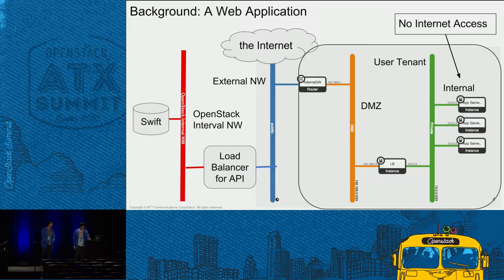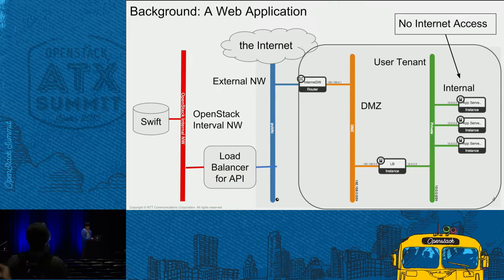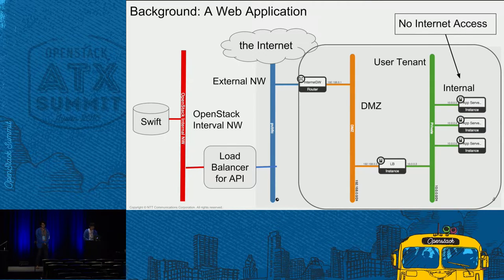Let's move on to our background. This diagram shows an example of a web application system on a public cloud using OpenStack. We have Swift behind the load balancer for API, and they are connected to the API network, the red one. The load balancer is also connected to external network, the blue one. On the right side is the user tenant. There is a load balancer for users, and web application servers are behind it. Application servers are connected to the internal network, the green one, and they have no routers because they don't require direct internet access.